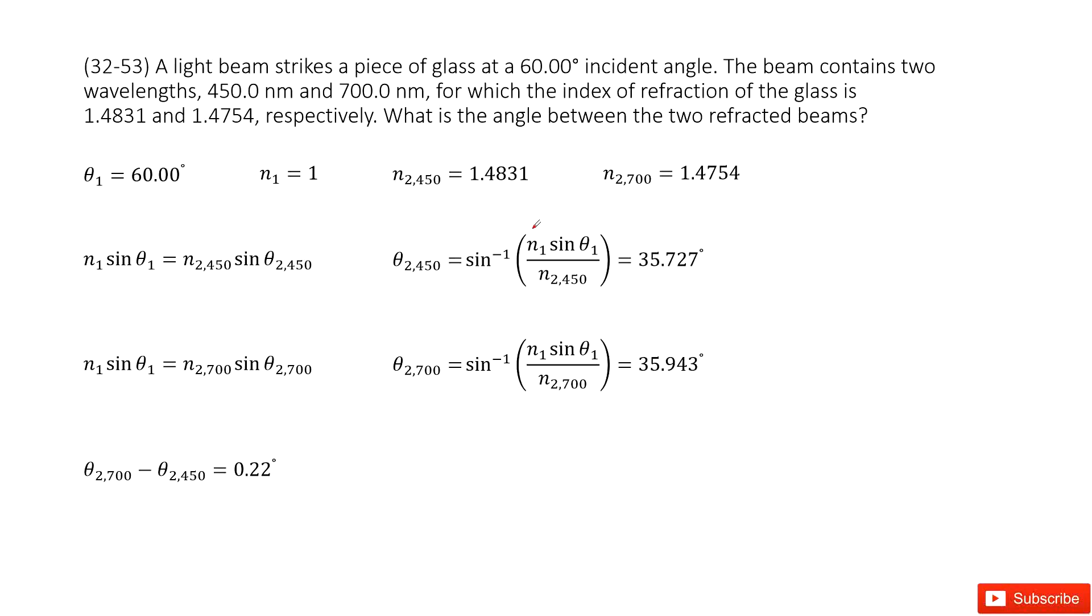Chapter 32 is about light reflection and refraction. We have a light beam with an incident angle of 61 degrees and it is incident from the air. So n1 is given.